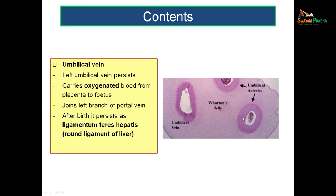The umbilical vein — initially two veins, with one degenerating so the left umbilical vein remains — carries oxygenated blood from the placenta to the fetus. It joins with the portal vein as part of fetal circulation. After birth it degenerates, persisting as the ligamentum teres hepatis (round ligament of the liver).